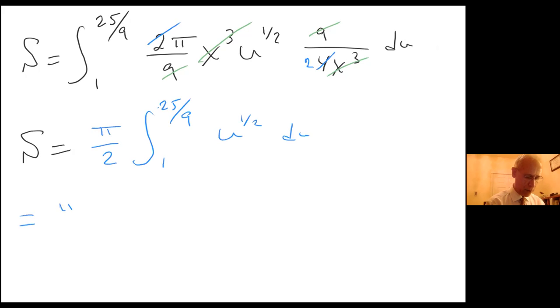So that equals π over 2, u to the three halves times two thirds, and that is from 1 to 25 over 9. So the 2 cancels in here.